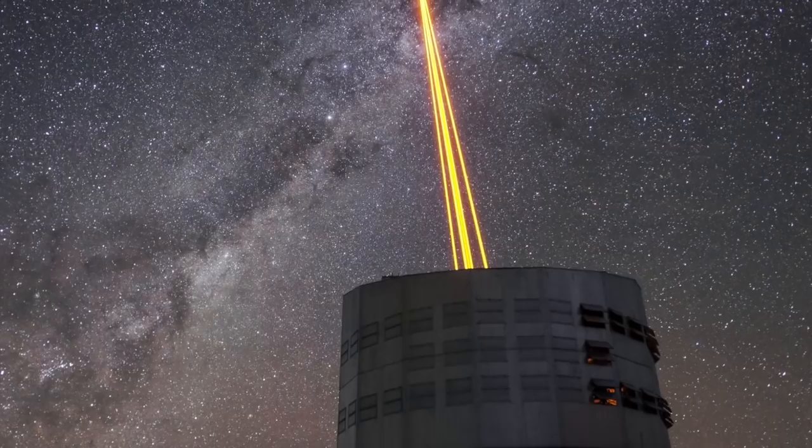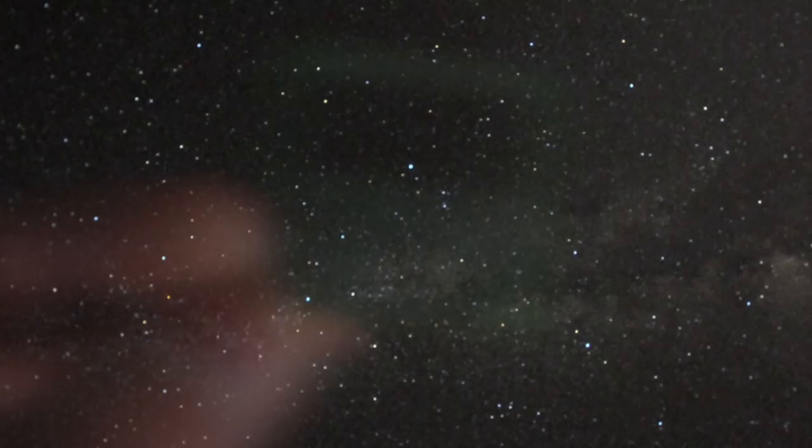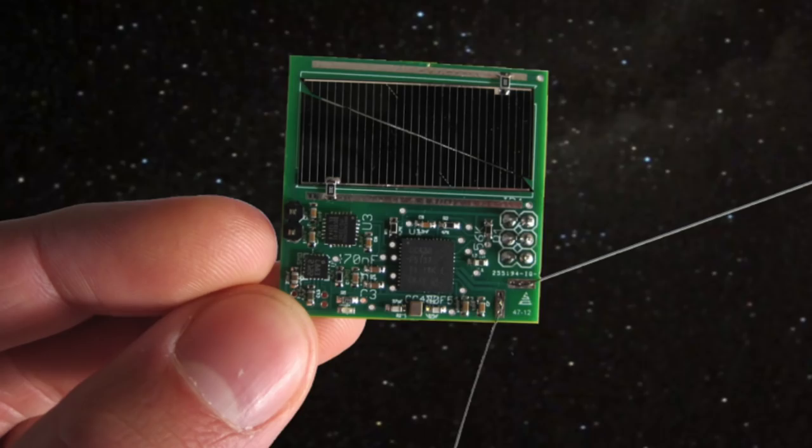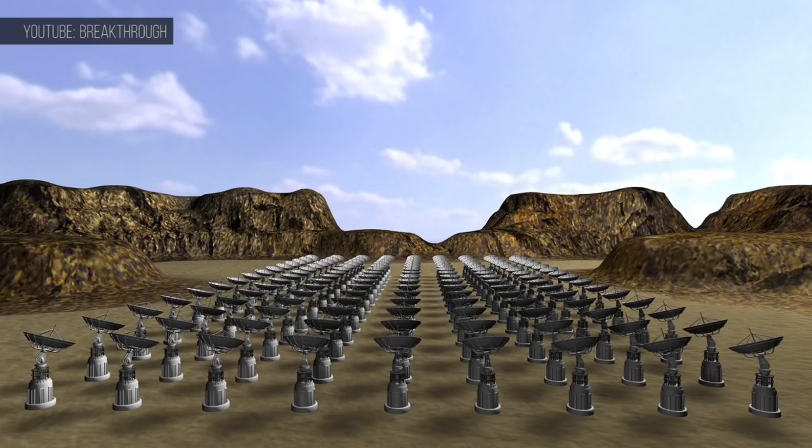A chip about 1cm wide will carry circuitry, thrusters, a camera, spectrometer, plutonium battery, and a laser to beam data back to Earth. It will be surrounded by a sail. An array of lasers back on Earth will beam it up to a speed of roughly 20% the speed of light.